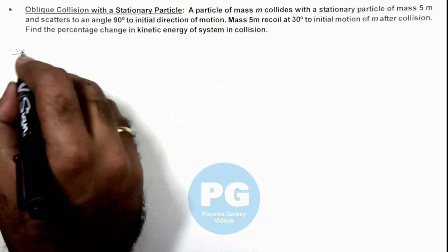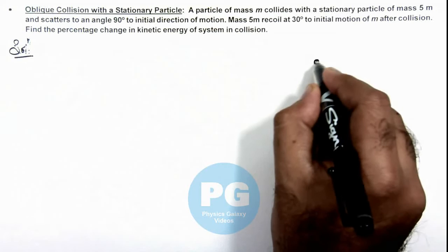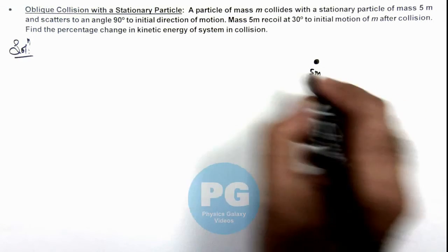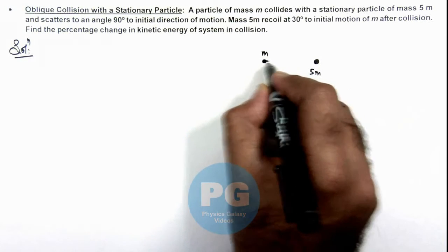Here, we can draw the situation first where this particle of mass 5m is kept at rest, and another mass m is moving toward it with the speed u.